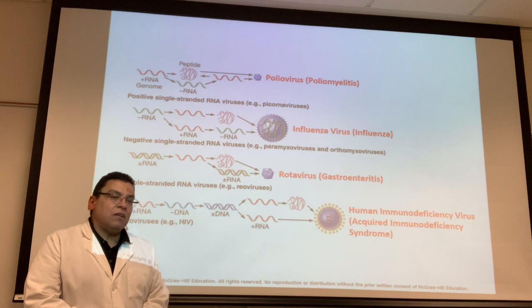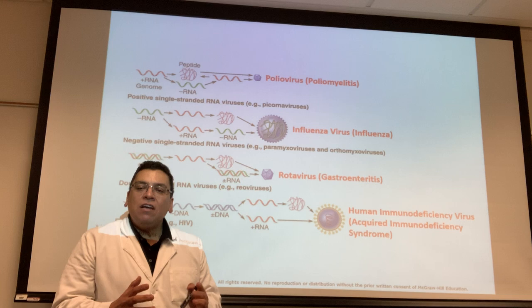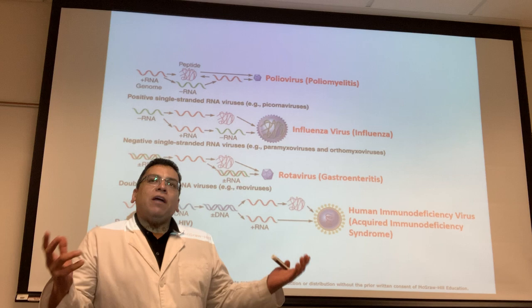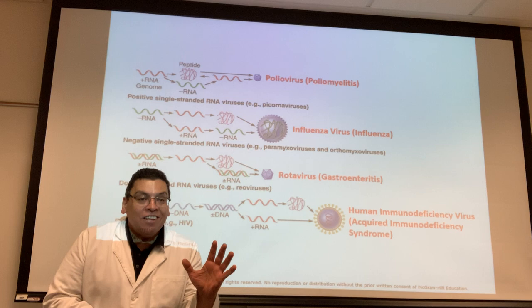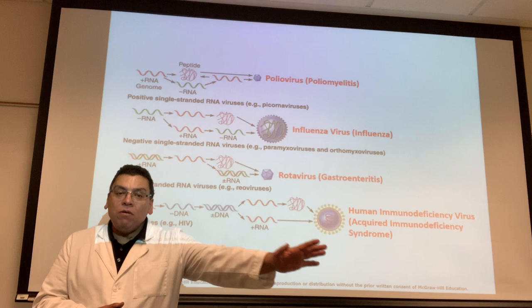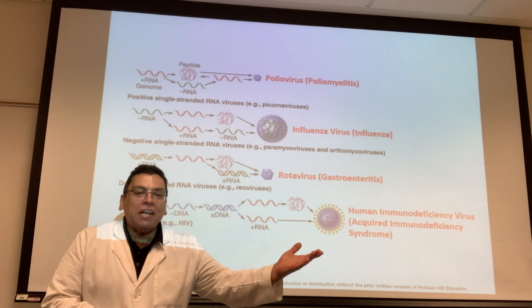HIV specifically infects a key player in the immune system called the helper T-cell. That's why HIV knocks out the immune system — the helper T-cell is the boss, the major player of your immune system. Even though the patient may have all other immune components, they never get the marching orders to fight because the boss is infected.